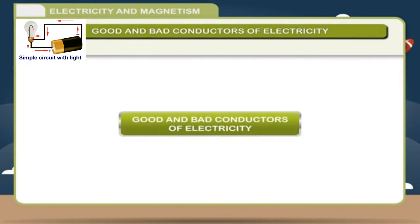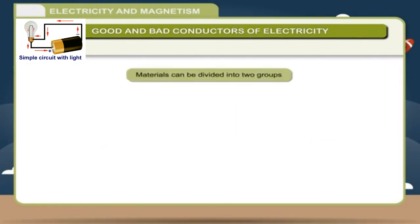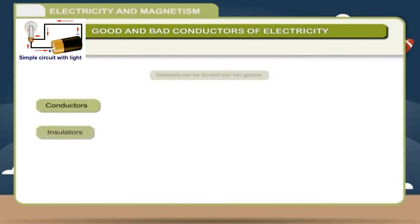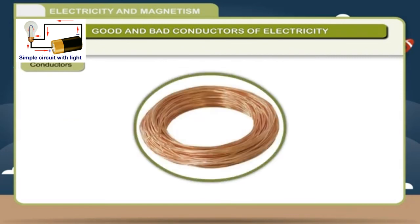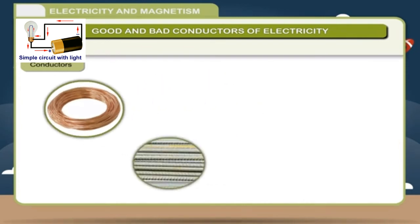Good and bad conductor of electricity. Materials can be divided into two groups, conductors and insulators. Conductors: materials that allow electric current to pass through them are called conductors. All metals are good conductors of electricity.